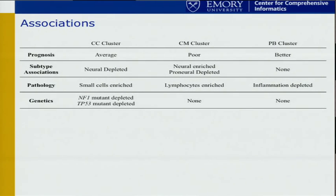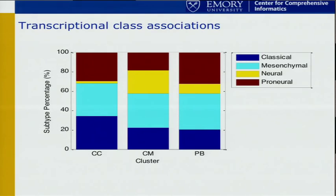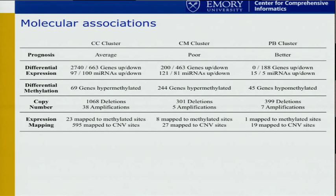We looked at associations with molecular subtypes and found some mildly significant results, but nothing definitive. The same goes for pathology ratings — there's some small cell enrichment in the cell cycle cluster and some lymphocyte enrichment in the chromatin-modifying cluster, but nothing so specific that it's definitive. The same goes for genetics. Looking at the distributions of Verhoek subtypes among these clusters, there is some variation but it's pretty close to uniform, so that doesn't really explain what we're observing.